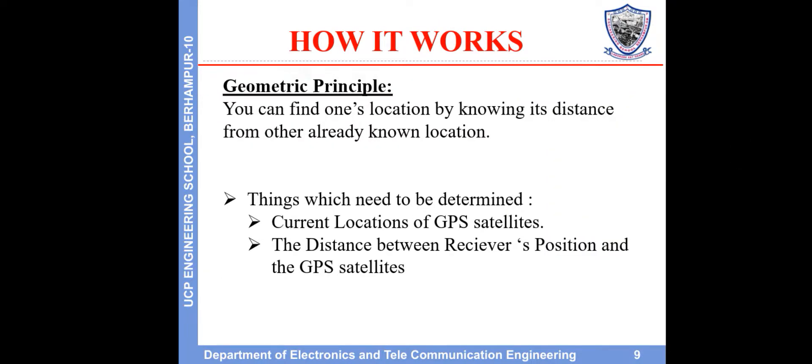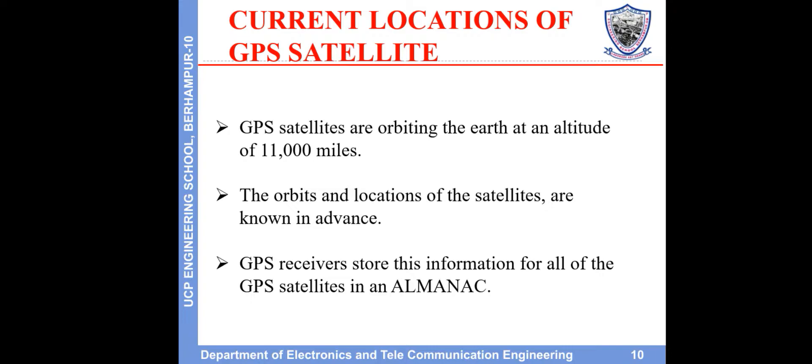How it works. The geometric principle: you can find one's location by knowing its distances from other already known locations. Things which need to be determined are the current locations of GPS satellites and the distance between the receiver's position and the GPS satellites. GPS satellites orbit the earth at an altitude of 11,000 miles. The orbits and locations of the satellites are known in advance, and GPS receivers store this information for all GPS satellites in an almanac.